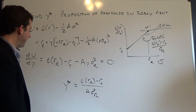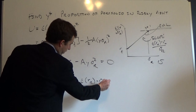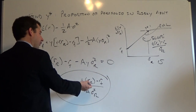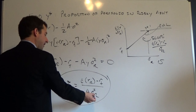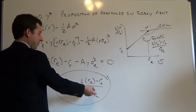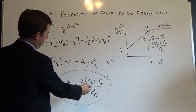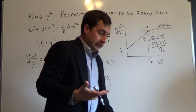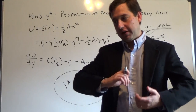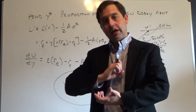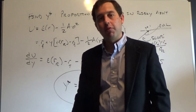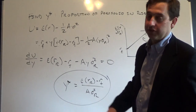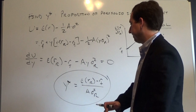So this is the proportion we invest in the risky portfolio. We take the expected return on the risky portfolio, the risk-free rate, and the variance of the risky portfolio, plug them in, and it gives us some Y*. For example, if it gives us 83%, we put 83% in the risky portfolio and 17% in the risk-free asset.